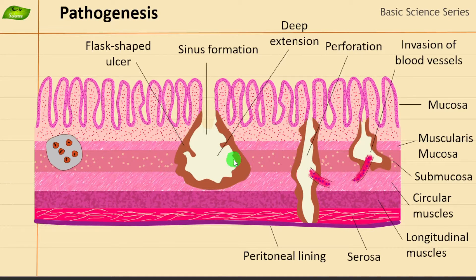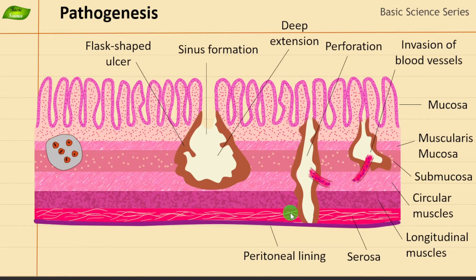Hello everyone, welcome to today's video. Today we will be discussing the pathogenesis of Entamoeba histolytica infection. This is the illustration that I will create, representing the damage caused to the intestinal wall. You can see different layers, and we'll talk about the different types of damages that Entamoeba histolytica can cause to the intestine.